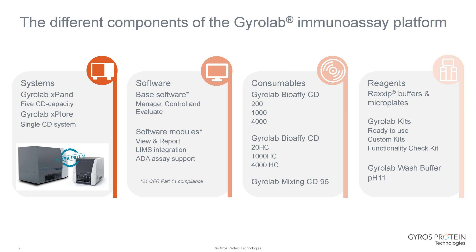We are very much moving towards Gyrolab kits — ready-to-use solutions. We have a wide variety of kits, particularly in the cell and gene therapy and bioprocess areas, but also kits for generic PK, TK, and we're moving into the biomarker field with ready-to-use kits for cytokines, for example. We can also do custom kits if you want your assay converted to a kit. We also have a functionality kit used to test assay performance and for routine maintenance, and a specific wash buffer developed to minimize carryover.